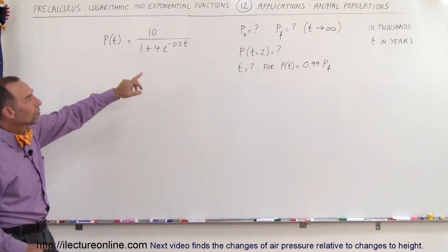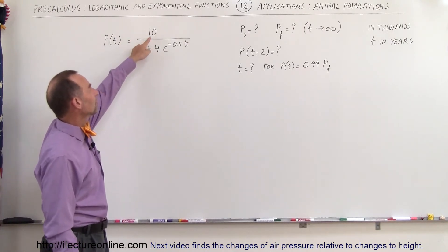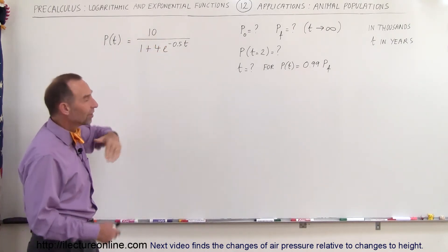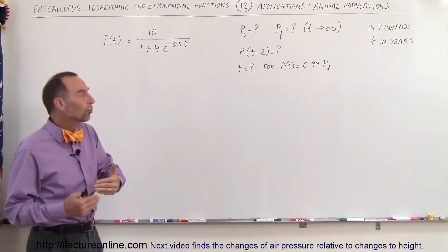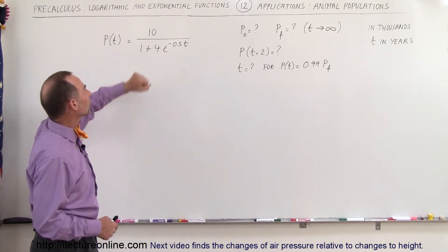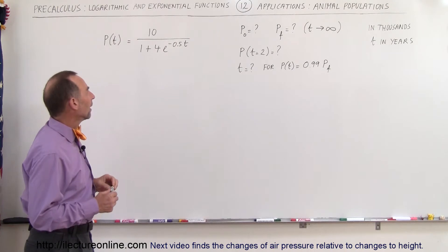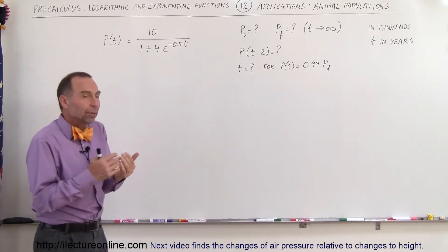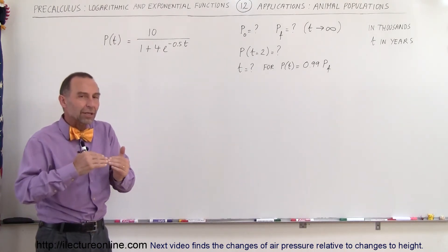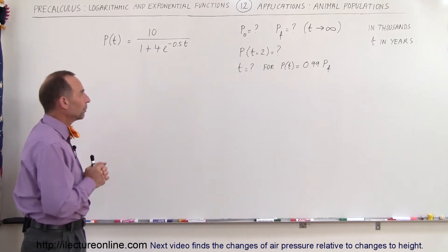The number we're dealing with is in thousands, so that would be 10,000, and time is in years. As time goes by, the population will increase to a larger and larger amount. It will then have a limit, because the resources will be limited, and populations are always limited to the resources available.